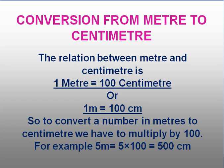Hello children, today we will see how to convert meter to centimeter and vice versa. The relation between meter and centimeter is 1 meter is equal to 100 centimeter. You should learn this — meter can be represented as m and centimeter as cm. So you can write it as 1m is equal to 100 cm.